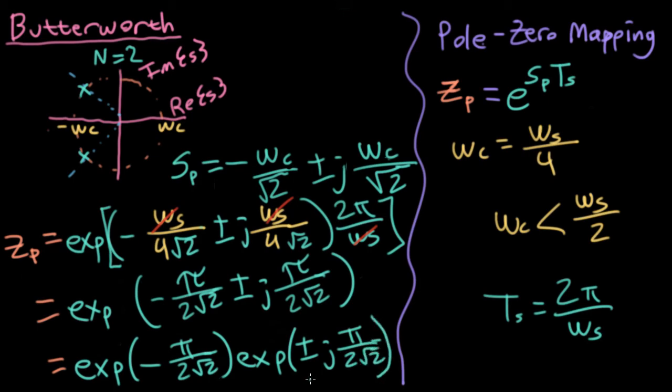So I can split this into exp minus pi over two square root of two, times exp plus minus j pi over two square root of two. I only had two poles here, so they're complex conjugate pairs. Just remember that this zp and this sp represent sequentially plugging in all of the poles that you have. And you'll do a similar step with all of the zeros.